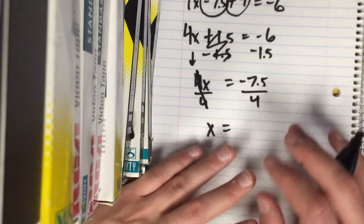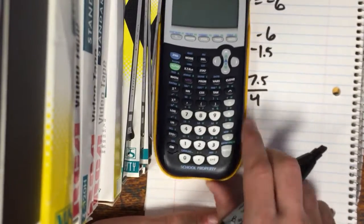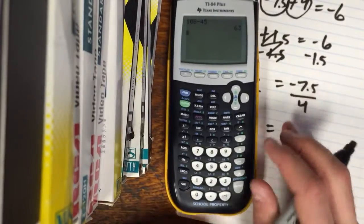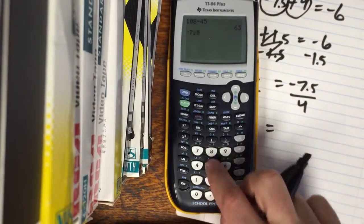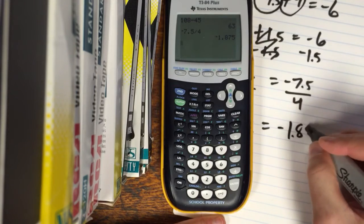Now I don't know how your teacher wants you to write this. You leave it as a fraction. Let's find out what the exact answer is. Okay so negative 7.5 divided by 4. Negative 1.875.